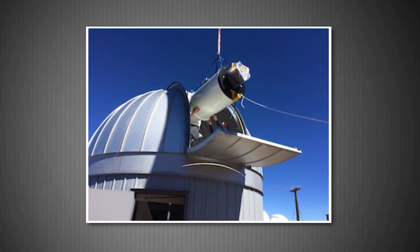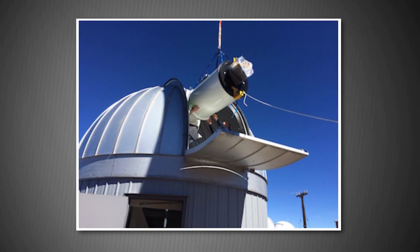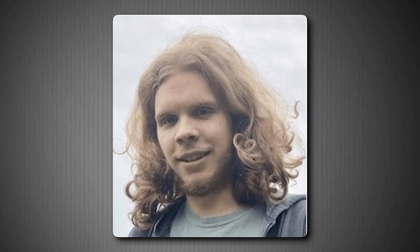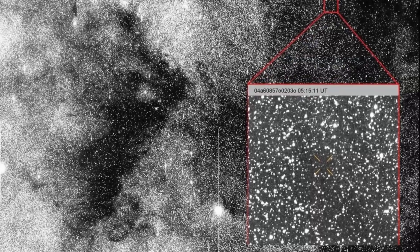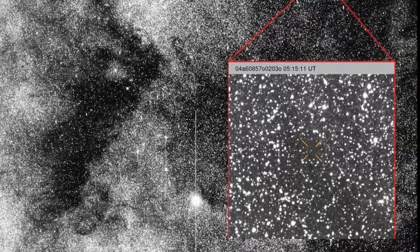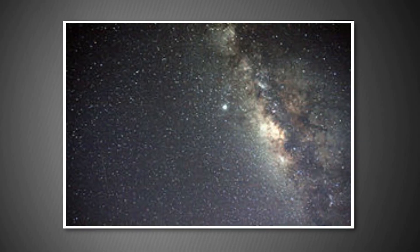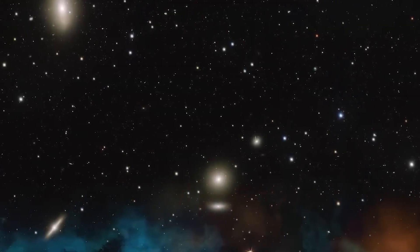The ATLAS telescope in Rio Hurtado, Chile, flagged an object that didn't match any known asteroid or comet. Within hours, amateur astronomer Sam Dean started digging through archived observations and found something incredible. This object had actually been photographed before the official discovery, going all the way back to June 14th, 2025. It had been hiding in plain sight, passing in front of the dense star fields of the galactic center, where it was nearly impossible to distinguish from the countless stars in the background.